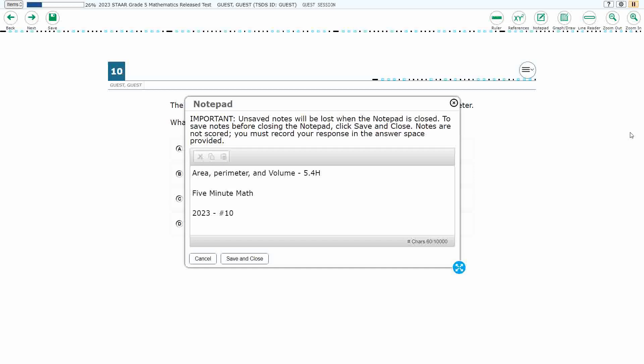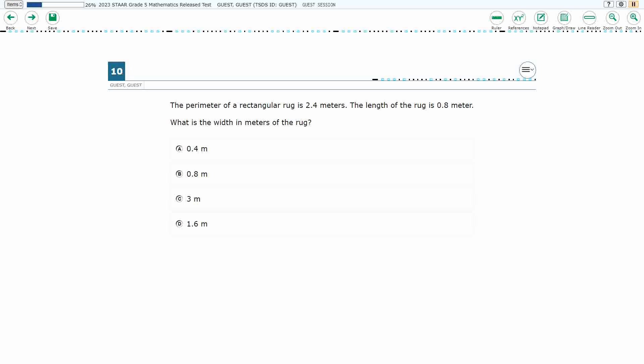Hello and welcome to 5-Minute Math. Today we are looking at the fifth grade concept of area, perimeter, and volume. This is standard 5.4H in the great state of Texas. We are using item number 10, the 2023 released STAAR test.